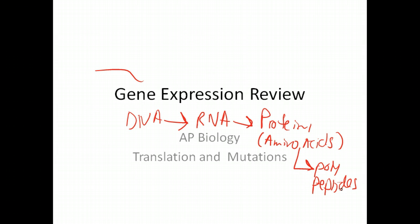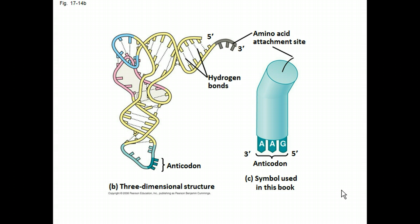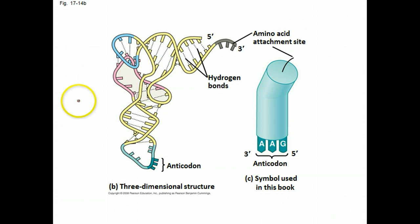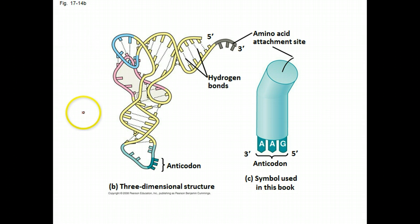We're going to start off with translation. With translation, what you have is a situation where the messenger RNA has left the nucleus and is in the cytoplasm seeking out a ribosome — be it a ribosome on the endoplasmic reticulum or a ribosome free floating in the cytoplasm — and it's going to be translated.